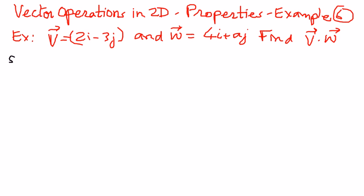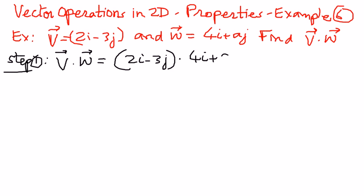Let us try these different steps. Step number one: vector v dot vector w can be written as (2i minus 3j) dot (4i plus aj).